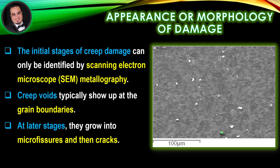Appearance or morphology of damage: The initial stages of creep damage can only be identified by scanning electron microscope metallography. Creep voids typically show up at the grain boundaries, as illustrated in the figure showing a typical scanning electron microscope image of creep voids at 500x. At later stages, they grow into micro-fissures and then cracks.